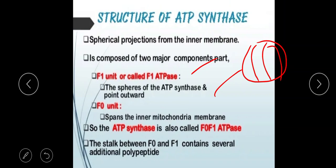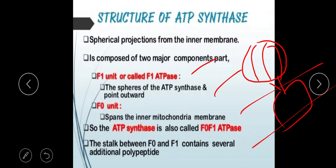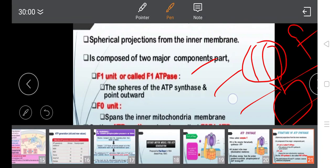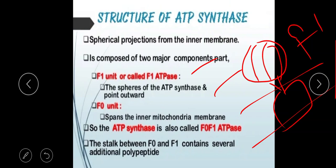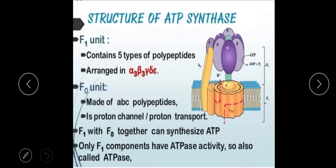F0 spans the inner mitochondrial membrane and forms the proton channel. F1, the spherical catalytic unit, and F0, the membrane-embedded portion, together make up ATP synthase, also called complex 5. The F1 region consists of five types of polypeptides.